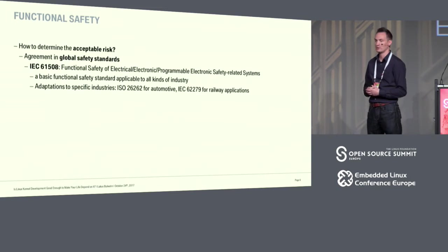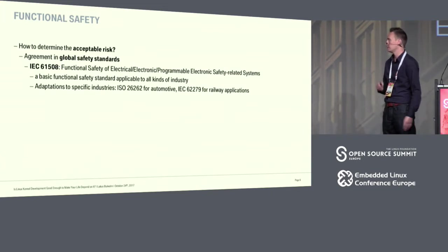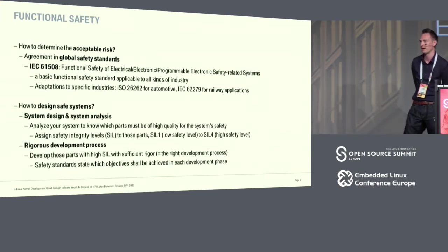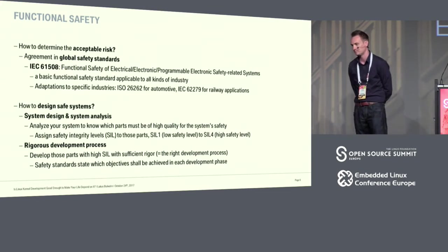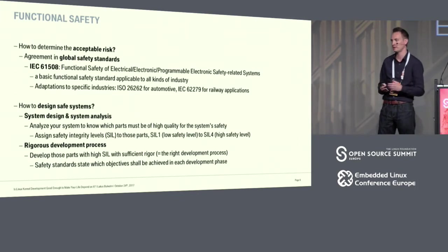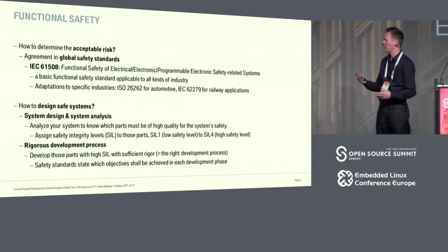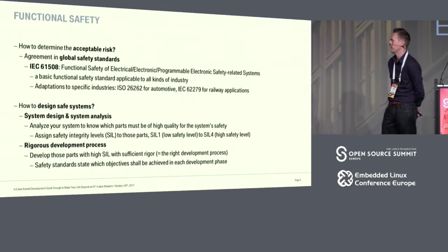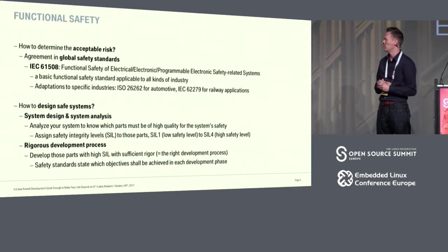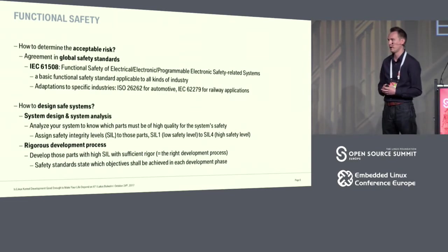When you print out IEC 61508, you have 10,000 pages of nicely written prose that looks like legal text. If you summarize it in half a slide, you'd say: if you want to design a safe system, you do two things. First, you do a system design and analyze your system to find out which part must be of high quality and which must be of higher quality than others. For that you have safety integrity levels, SIL 1 to SIL 4 — SIL 2 is kind of medium risk and medium safety level. Then, to actually achieve that with a rigorous development process, you can build high quality software. The safety standard tells you which objective you want to meet in each development phase to get a high quality product.